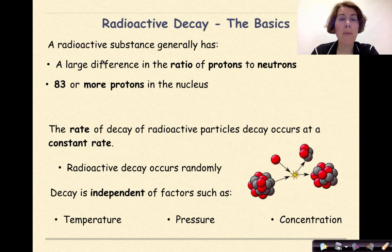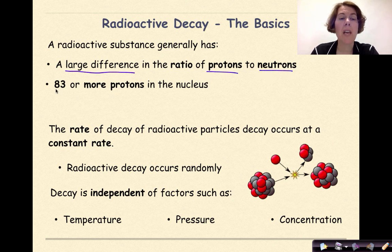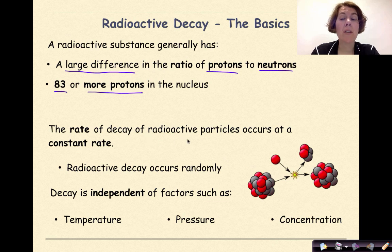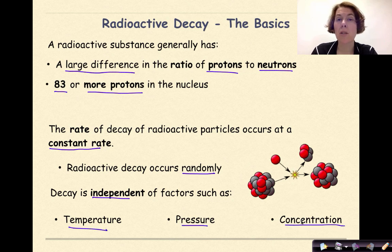Based on what we've talked about before, we know that a radioactive substance generally has a pretty large difference in the ratio of protons to neutrons. Naturally radioactive elements typically have 83 or more protons. Remember, 83 is the atomic number for bismuth, so that's where on the periodic table we really start to think about elements being naturally radioactive. The rate of decay of radioactive particles occurs at a constant rate. Radioactive decay occurs randomly and is independent of factors such as temperature, pressure, and concentration, which we also know as molarity.